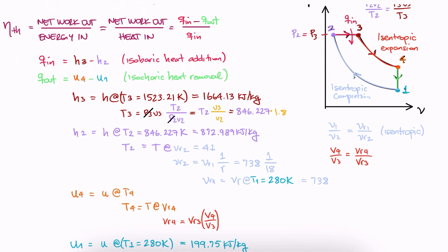But it's an easy calculation. The ratio V4 over V3 can be written as V4 over V2, which is the compression ratio, times V2 over V3, which is the reciprocal of the cutoff ratio.